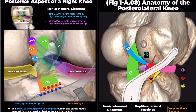The Humphrey and Risberg meniscofemoral ligaments and the posterolateral corner structures functionally support the PCL. More detailed explanations will be provided later. This image displays a posterior view of the knee, with the ligaments rendered translucent to ensure the femoral footprints are clearly visible.